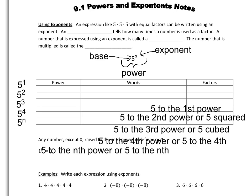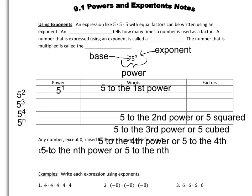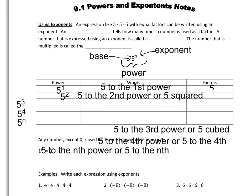When you're reading exponents, for example, when you have 5 raised to an exponent of 1, you don't say '5 raised to an exponent of 1.' What you say is '5 to the first power,' and what that's telling you is you have one 5, just a single 5 all by itself. When you have 5 with an exponent of 2, you say '5 to the second power,' or '5 squared.'